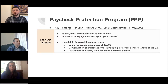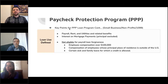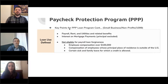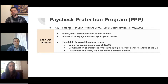The loan use for the Paycheck Protection Program is mainly for your payroll, rent, utilities and related benefits, and also for the interest on your mortgage payment — not your principal, which is excluded, if you are the owner of the business property. Not eligible for forgiveness: any employee cash equivalent compensation over $100,000, compensation of employees whose principal place of residence is not in the US, and certain sick and family leave for which credit is not allowed.